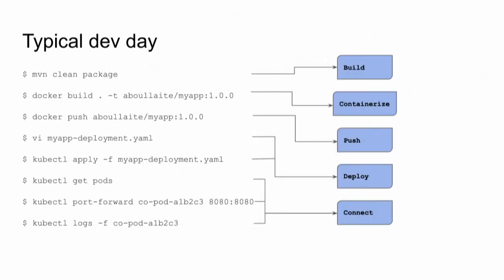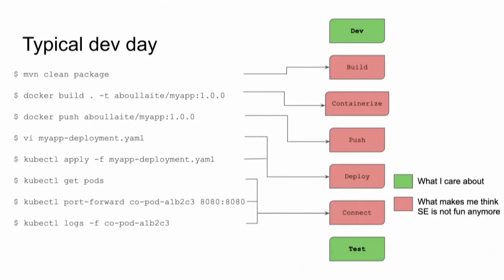If we go back to our typical day life and try to label and tag the steps, we see five main categories: build our application using our favorite build tool, containerize it, push it into a registry — because if we have a remote development cluster it needs to pull those images — deploy it into our cluster, and then connect to see if everything works fine. But the problem is these are not the things that excite us as developers. What really excites us are mainly two things: we need to introduce new changes and develop them, and we need to test and verify that those changes work according to expectation.